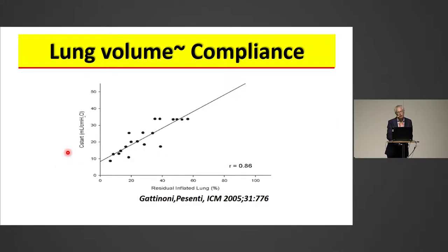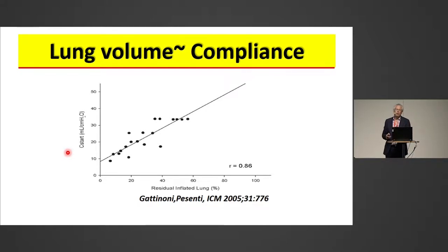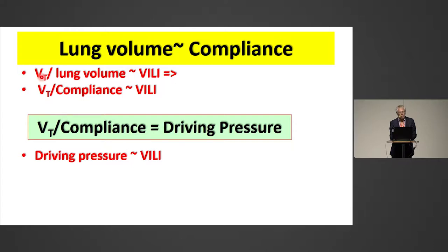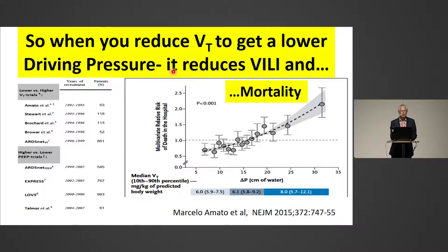And that's also quite straightforward. It was published long ago that lung volume is actually linearly related to compliance. We know that tidal volume divided by lung volume is associated with ventilator-induced lung injury. If you substitute lung volume with compliance, tidal volume divided by compliance is the same as driving pressure. Therefore, driving pressure must be related to ventilator-induced lung injury. What you should do is reduce the tidal volume to achieve a lower driving pressure, which reduces ventilator-induced lung injury and, as we know, mortality.